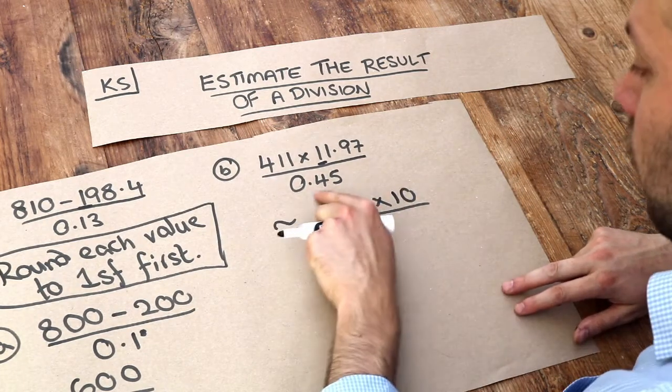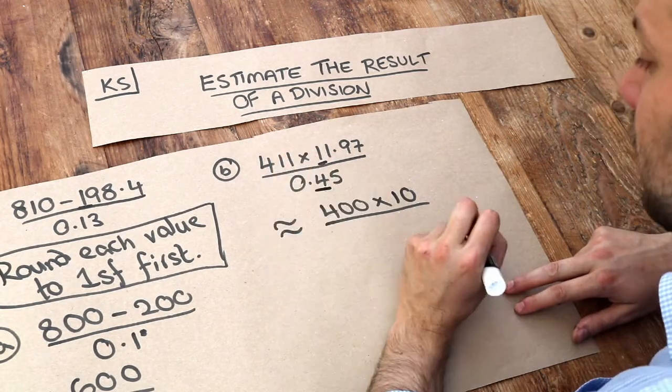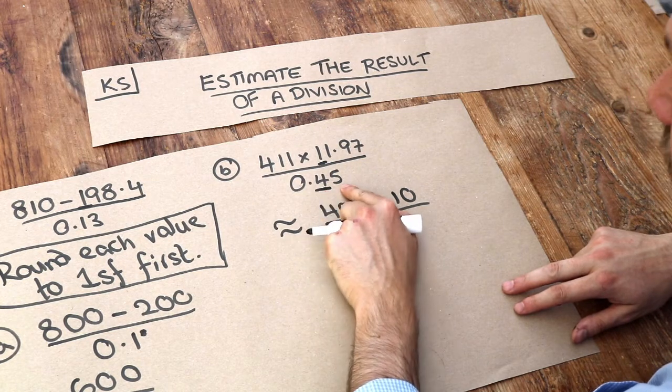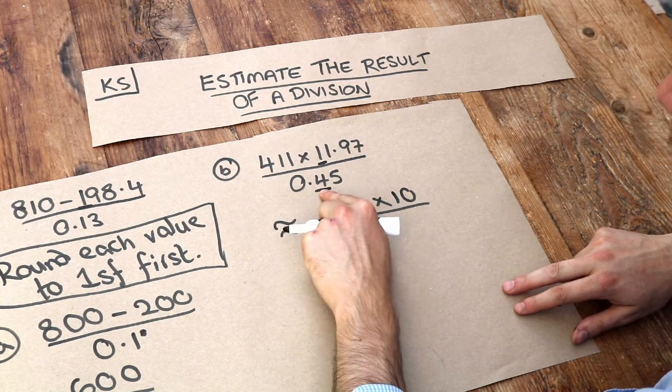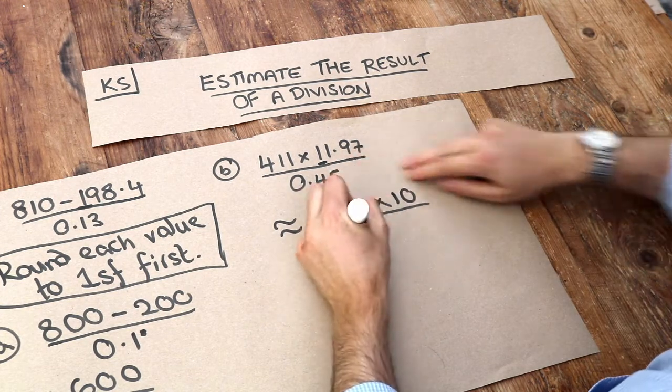Then this to one significant figure. We look at the first non-zero digit. We check the digit after. Is it 5 or greater? Yes it is, so that goes up to 5. And we discard after it, so it's 0.5.